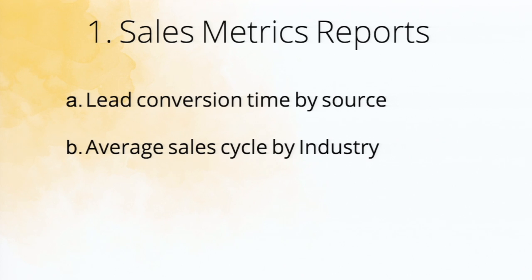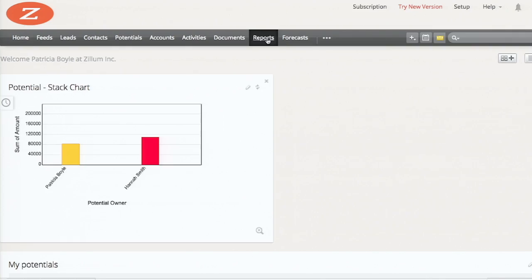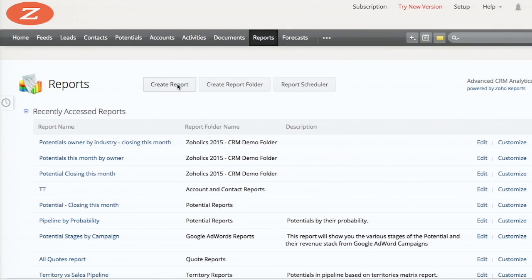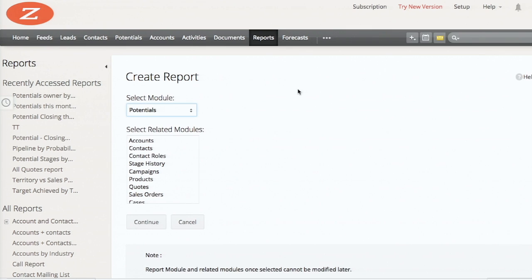How do you measure the average sales cycle by industry - which industry closes fastest? Once you measure them, you have control over it. Let's get into a demo showing how average sales cycles can be determined based on industry. I go to reports - it's all about potentials. I'm going to create a report that tells you about the average sales cycle across your industries using a summary report.